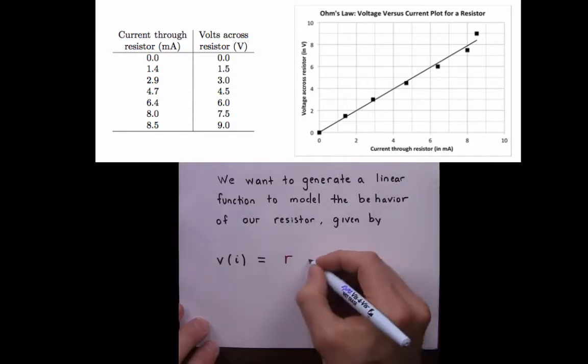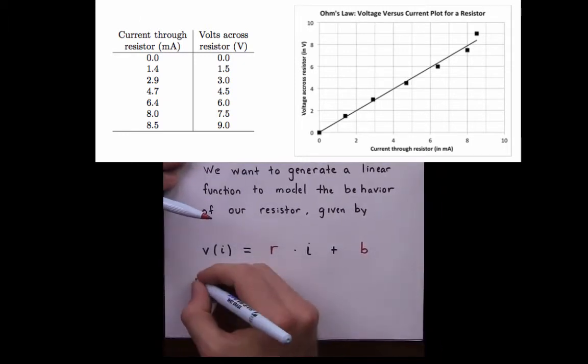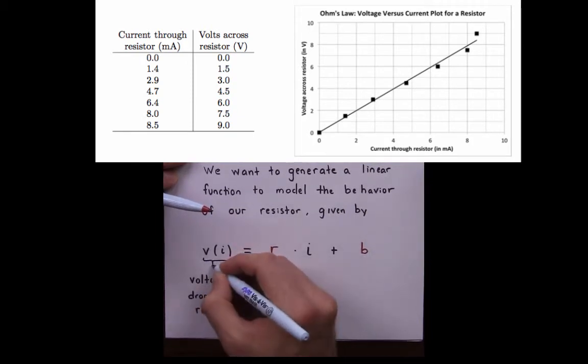which we'll set equal to R times input value I plus B. In this case, the output V of I represents the voltage drop across the resistor.